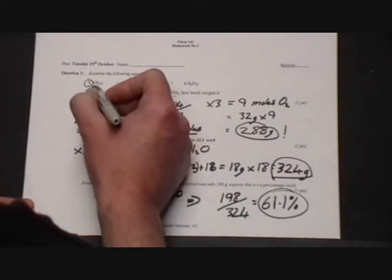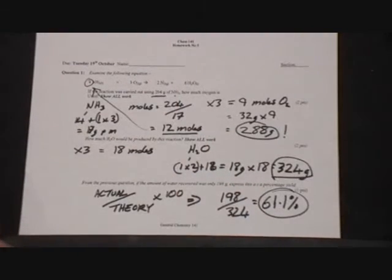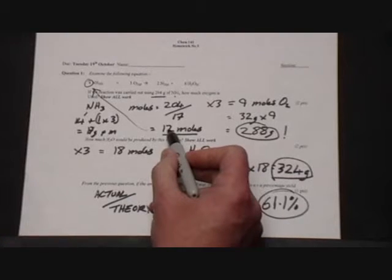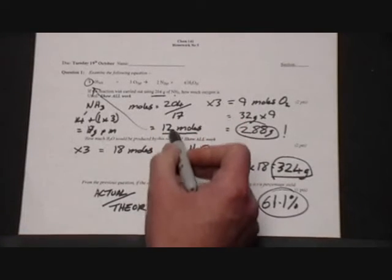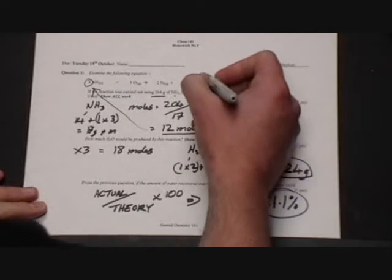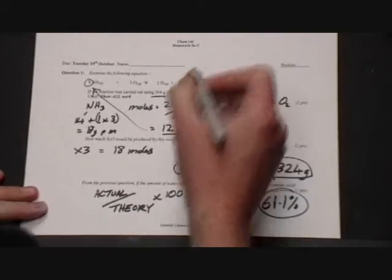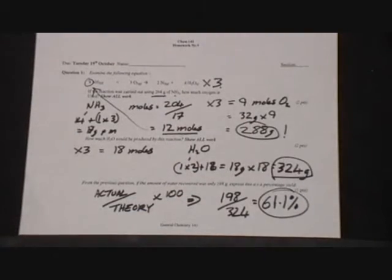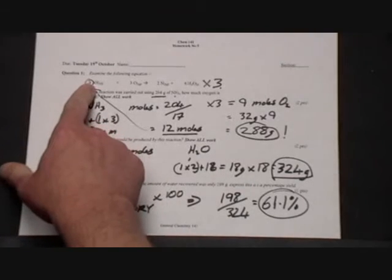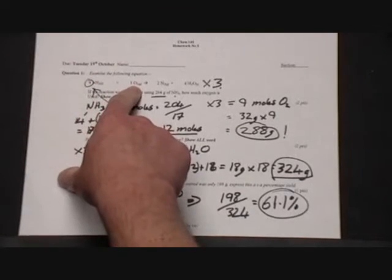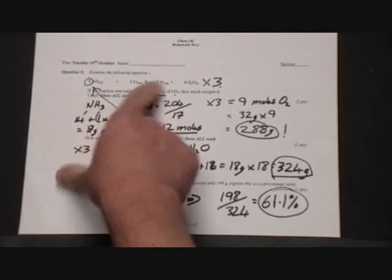Now the equation originally uses four moles. So if we now have 12 moles, 204 grams, we have three times as much. And if we have three times as much of the ammonia, we need three times as much of the oxygen gas. Three moles, three times as much, is going to be nine moles.